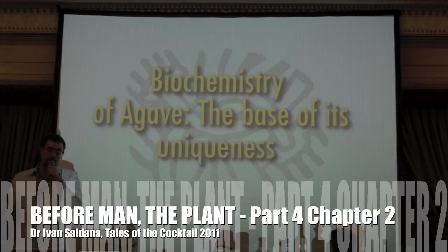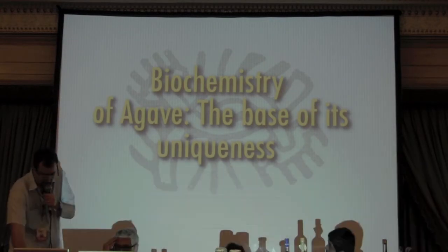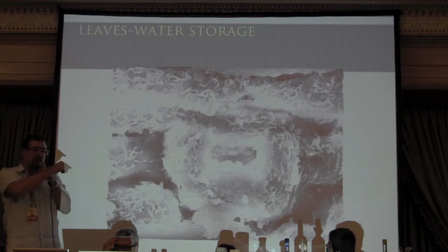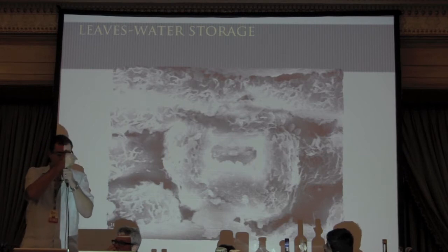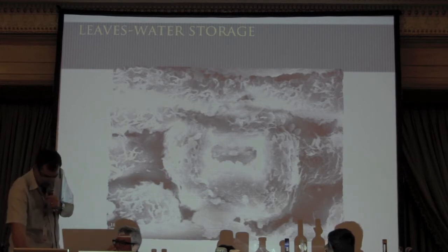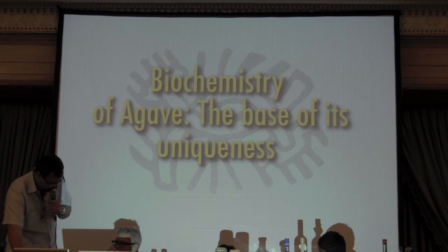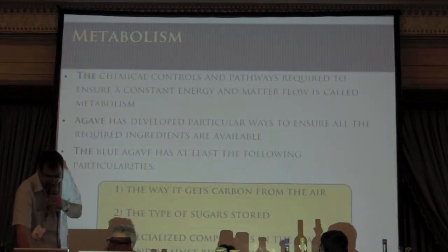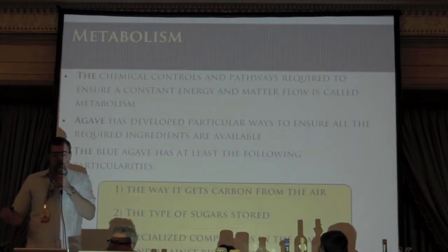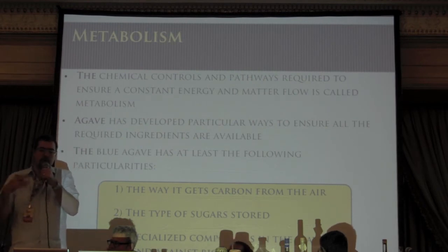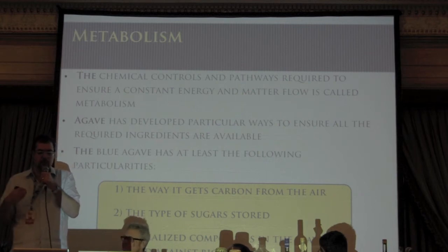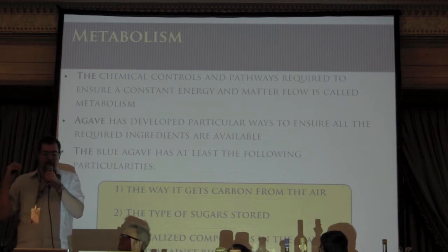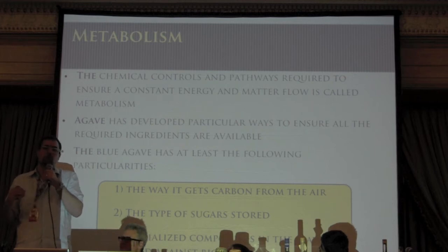These photographs here, in order to move into the biochemistry — the little cells are all along the leaves, actually the little holes through which CO2 enters into the plant. Metabolism is required for any living organism. It's basically the chemical controls and pathways required to ensure a constant energy and matter flow — essentially the rules to make life possible.